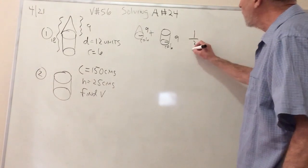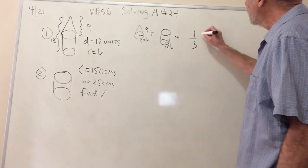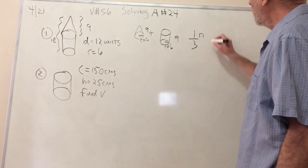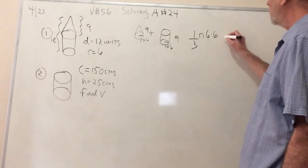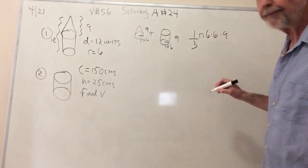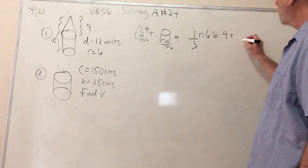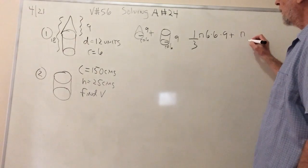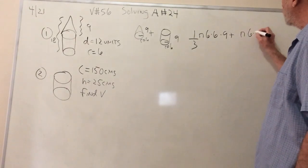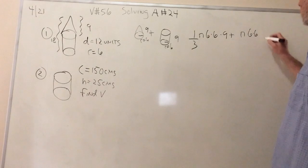So the compound volume will be 1 third pi 6 times 6, that means 6 squared, times 9 plus pi. And again, it's 6 times 6, which is the radius times 9.